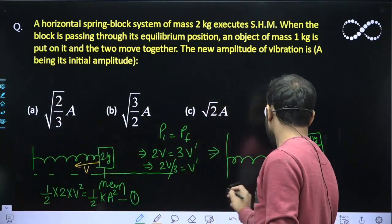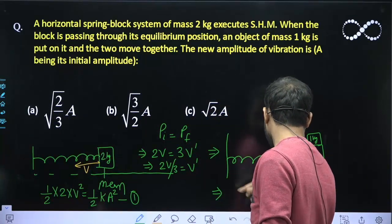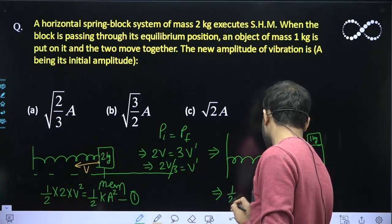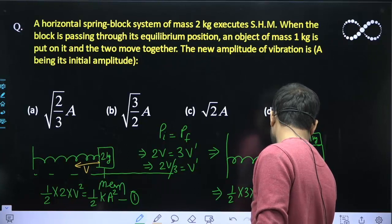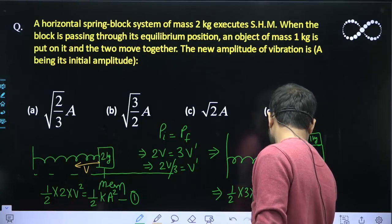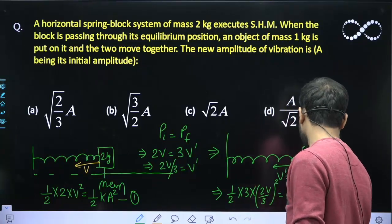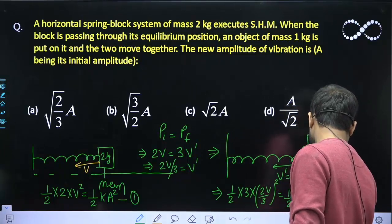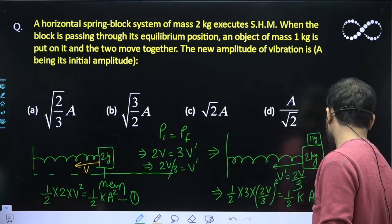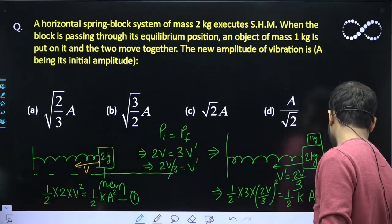Now in this one, I can write the same equation. K max, that is the maximum kinetic energy, is 1 upon 2 M into V_A square, that is 2V upon 3 all squared. And that must equal maximum potential energy, which is 1 upon 2 K, and let us assume here the amplitude is A1 square. So this is equation 2.